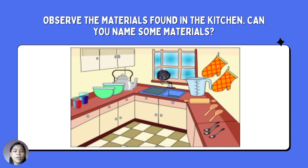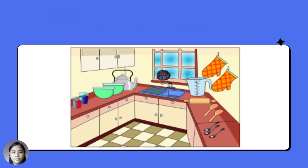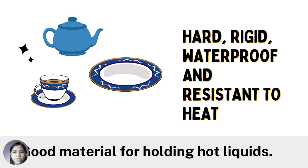Go to your kitchen. Observe the materials found in the kitchen. Can you name some? Look at the picture on our screen. Can you tell the uses of each material found in the kitchen? Each material has its own characteristics which tell about their properties. You can classify them based on their shared qualities and properties like texture, color, and hardness. These are called physical properties.